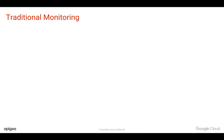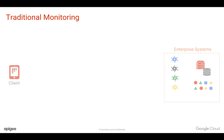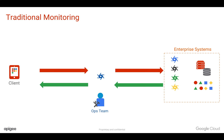Before we see what Apigee offers in terms of API monitoring, let's take a look at traditional monitoring. You have enterprise systems, and you have different clients which access the enterprise data through APIs. Your operations team is under greater pressure to make sure your APIs are available all the time. Traditional monitoring involves monitoring your backend systems and services, which is generally designed for monolithic applications. Generally, you do log analysis whenever something goes wrong.